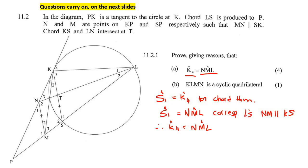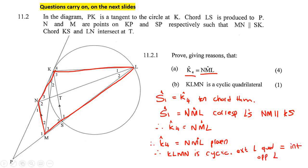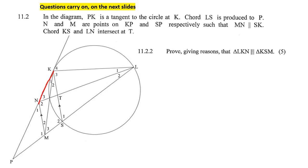Next question: prove that KLMN is a cyclic quadrilateral. This is for one mark — and you know why? Because it's so easy. We already proved that this angle is the same as this angle, so that's the exterior angle of a cyclic quad. So we can say K4 equals NML, which we already proved. Therefore KLMN is cyclic, because the exterior angle of this quadrilateral equals the interior opposite angle.